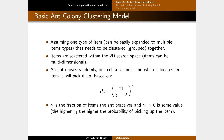The ants move randomly, one cell at a time. When it starts off, it is unladen. When it locates an item, there is a probability that it will pick it up. The probability to pick something up is defined as γ1 divided by (γ1 + λ), all squared.